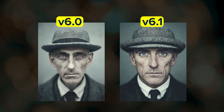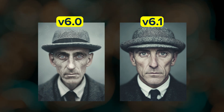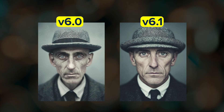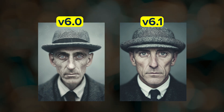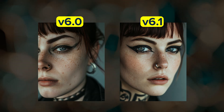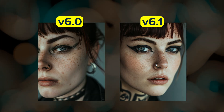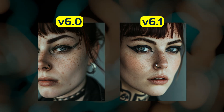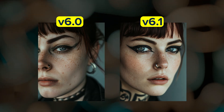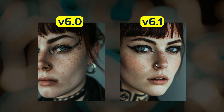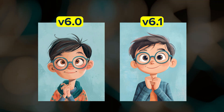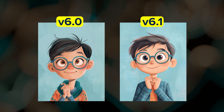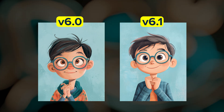First let's start with image quality. The 6.1 update brings a boost to image quality with reduced pixel artifacts and enhanced textures. Eyes and skin have improved clarity and look more realistic in photographic images. You should also see better coherence and accuracy when it comes to things like bodies and hands.